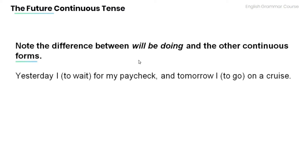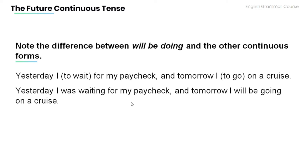Note the difference between will be doing and the other continuous forms. Now read the following sentence and provide the appropriate continuous form of the words in the bracket. Yesterday I [to wait] for my paycheck and tomorrow I [to go] on a cruise. Answer: Yesterday I was waiting for my paycheck and tomorrow I will be going on a cruise.